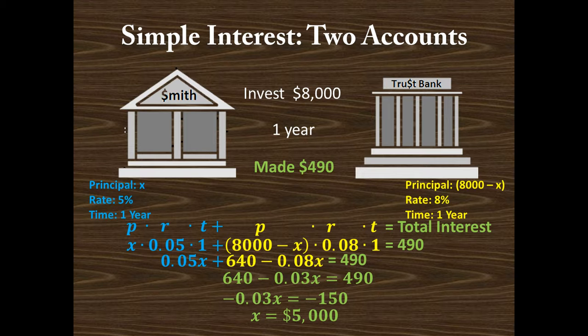So we invested $5,000 at 5% at Smith Bank, and the remaining $3,000 at 8% at Trust Bank. This is just one example of simple interest problems with two accounts. If you have any further questions, please come see me or post a comment, and I'd be happy to answer. Thanks for watching.